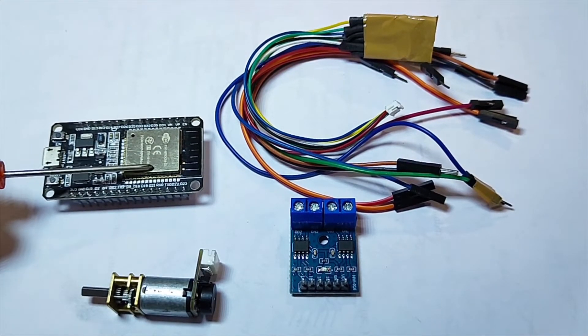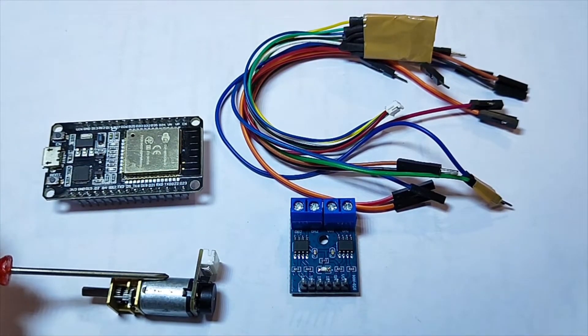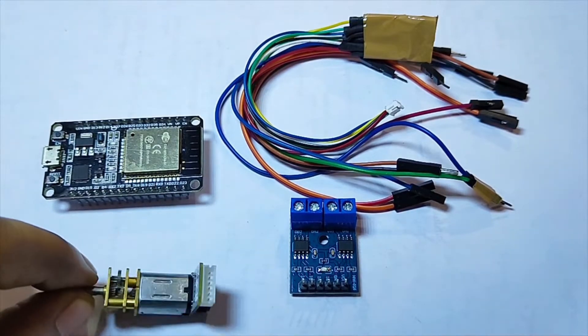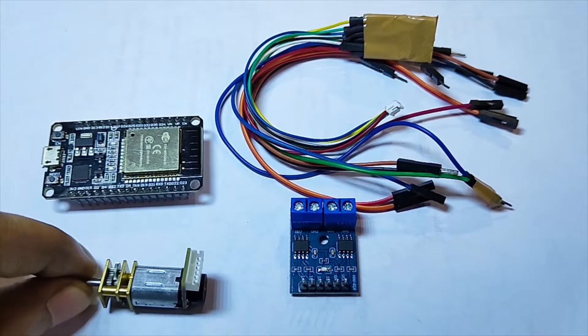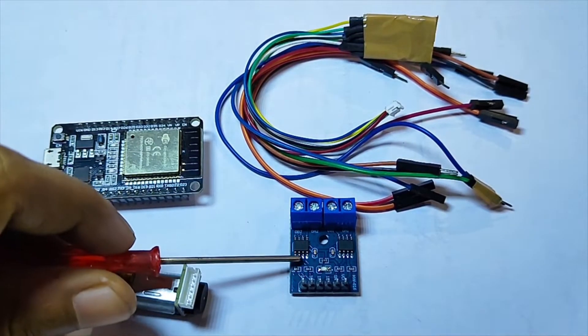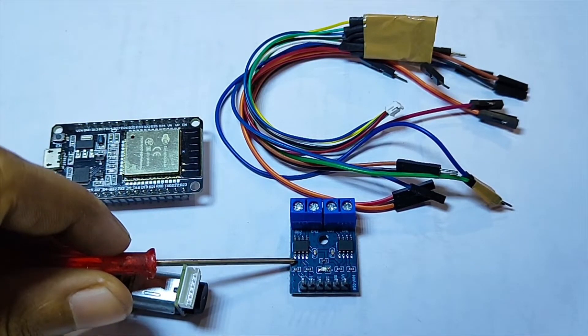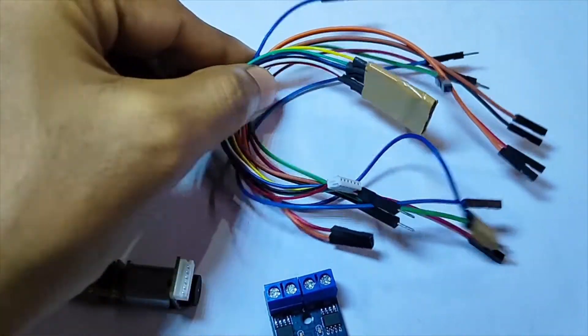First one ESP32, second one N20 encoder motor. Here we are using a 6 volt variant. And the third one is L9W10S motor driver shield. And the first components are few jumper cables along with those components.